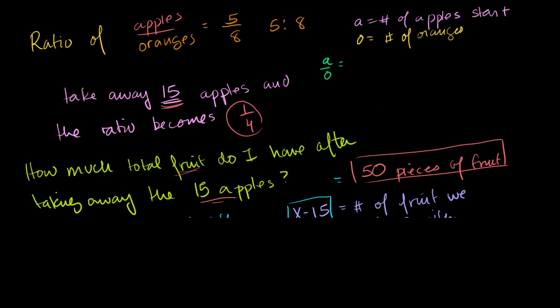So we could write, let me do it in a color that I haven't used before, I actually haven't used white. So we can say that the ratio of apples to oranges is equal to 5 to 8. That's what they tell us, that the number of apples we start with divided by the number of oranges, or the ratio of them, is 5 to 8.